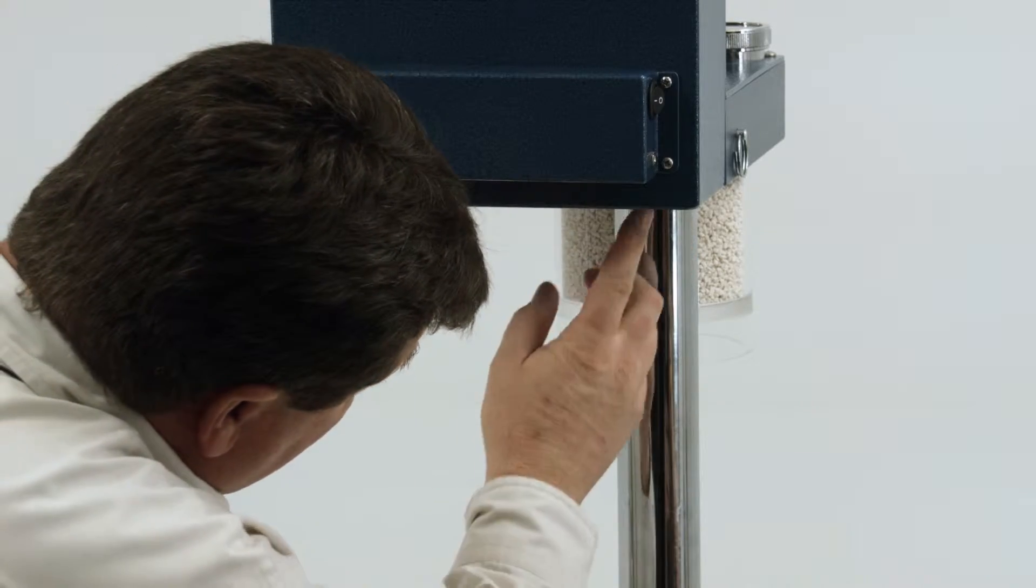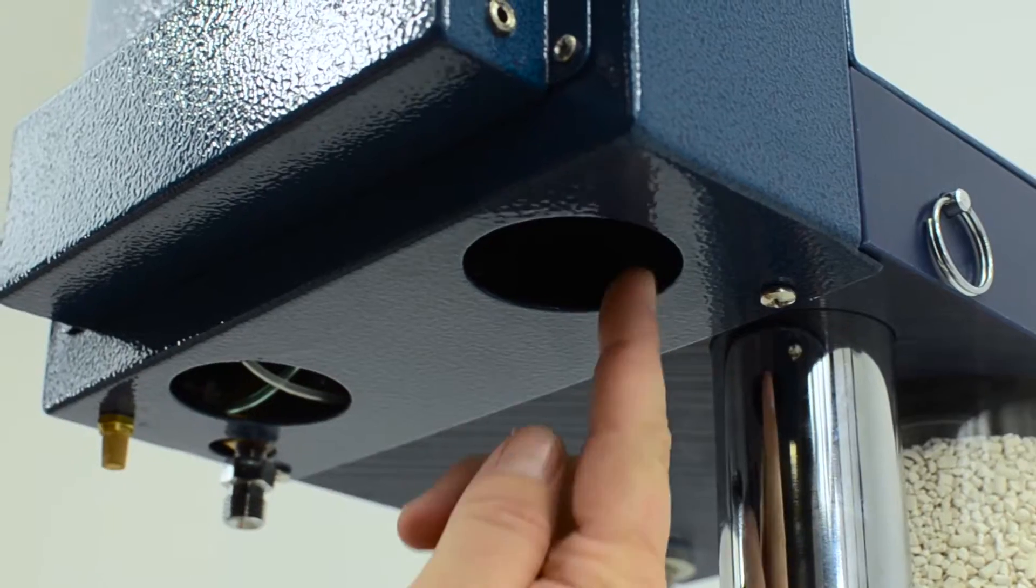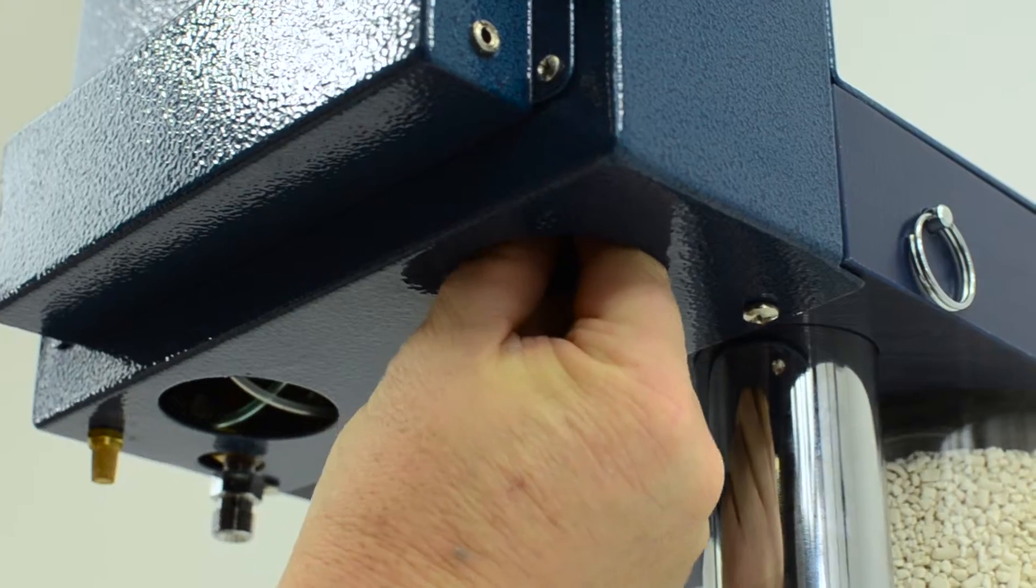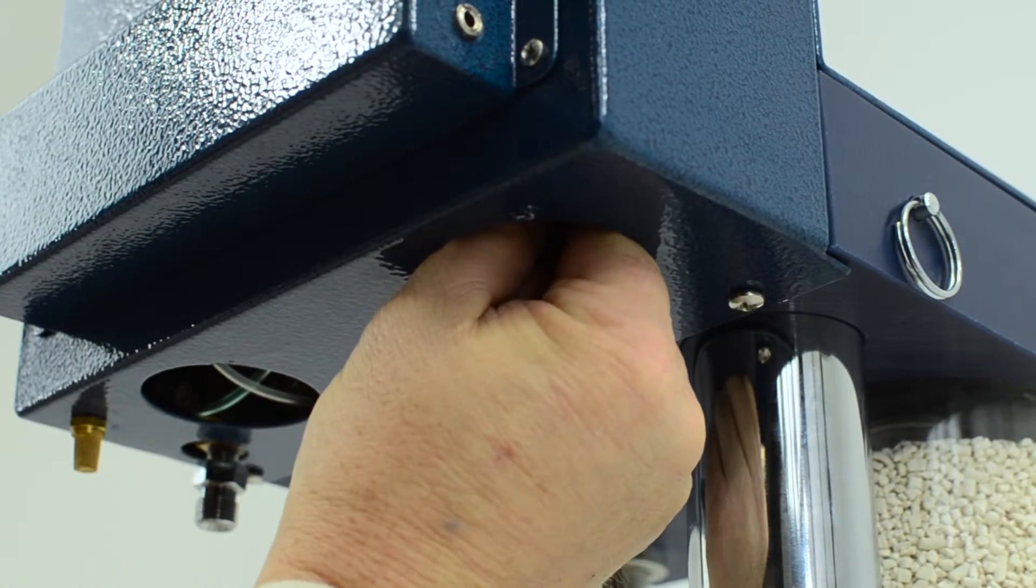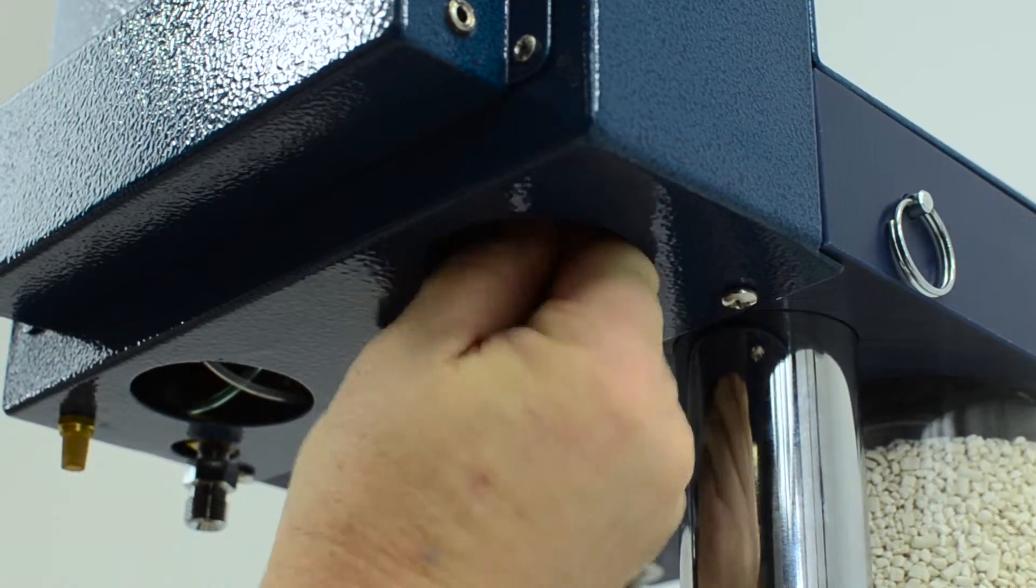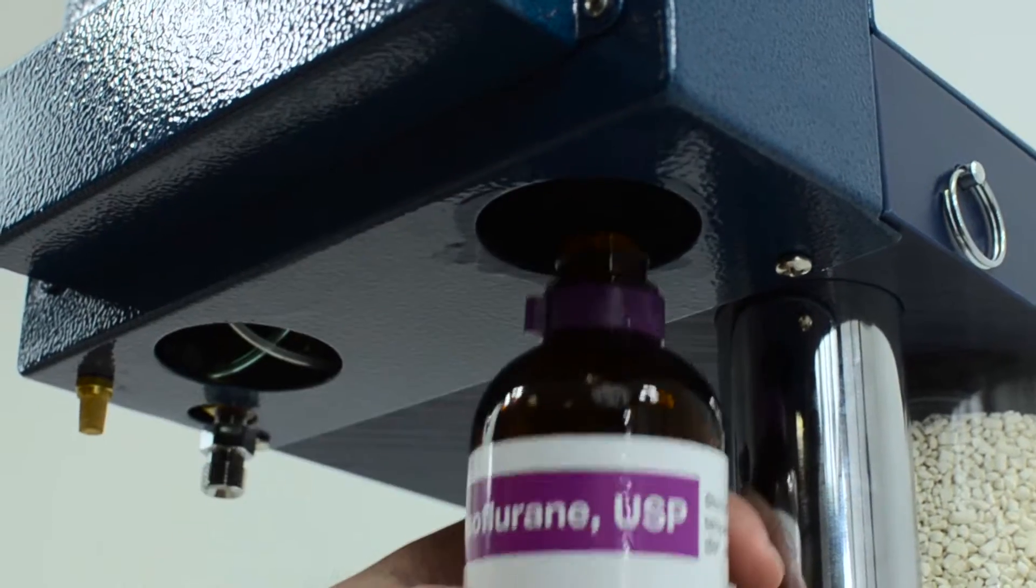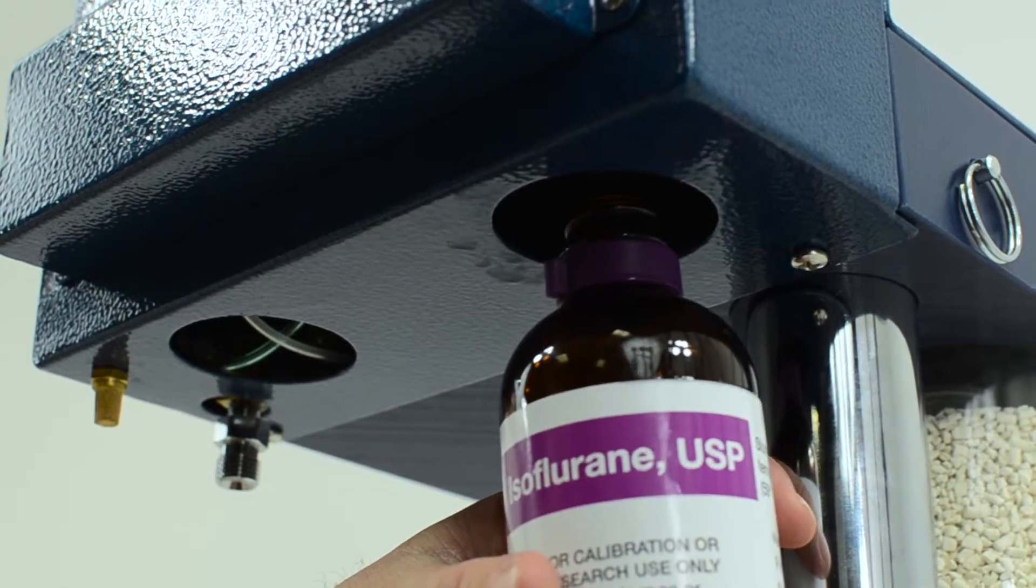You'll remove the black cover plug here and you'll reach up and you'll feel a little rubber nipple plug. You'll pull this off the bottom of the vaporizer and your drug will drain out then into the bottle.